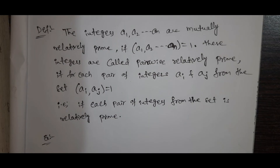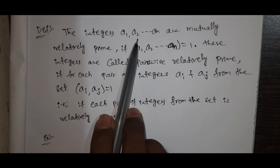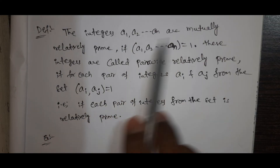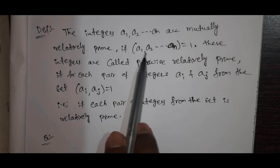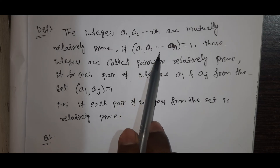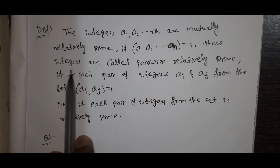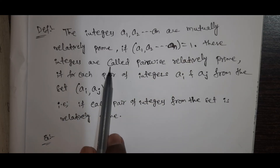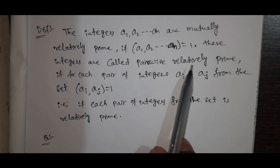Next definition: the integers A1, A2, so on and An are mutually relatively prime if GCD(A1, A2, ..., An) equals 1. These integers are called pairwise relatively prime.